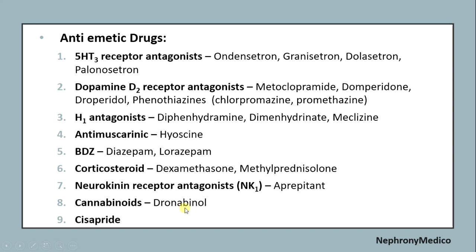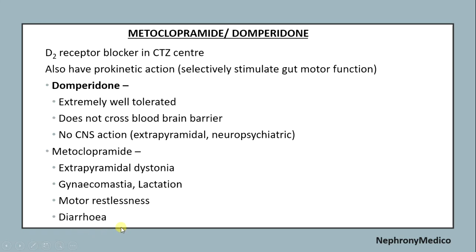Metoclopramide and domperidone are D2 receptor blockers in the CTZ and also have prokinetic action. Domperidone is extremely well tolerated — it does not cross the blood-brain barrier and has no CNS actions such as extrapyramidal or neuropsychiatric effects. Metoclopramide, however, causes extrapyramidal side effects including dystonia, gynecomastia, and lactation.